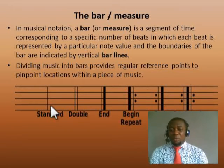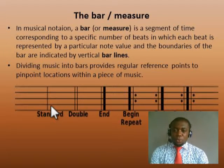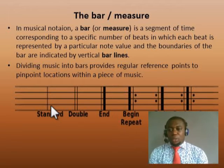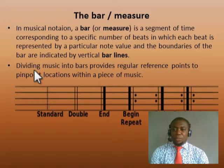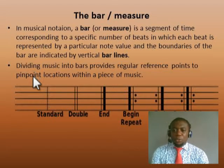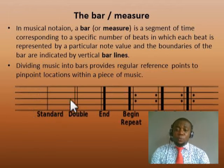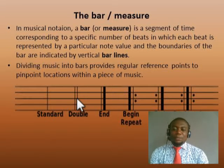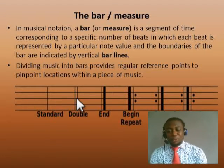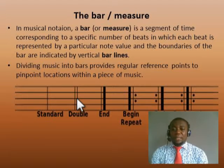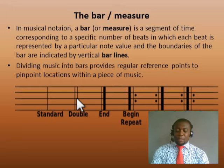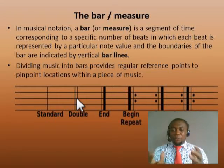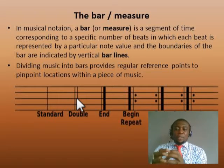So the bar helps us to divide a piece of music into equal measures. For example, dividing music into bars provides regular reference points to pinpoint locations within a piece of music. Sometimes in the choir, when the choir master is teaching a particular song, he might say 'let's go back to bar 52' or 'start from bar 43' or 'go to bar 102.' So bars provide reference points — specific locations that the choir master can easily call your attention to.